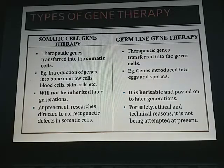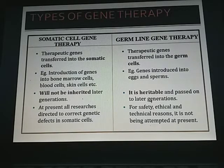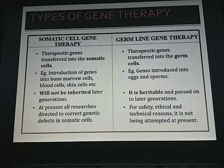Examples of somatic cell gene therapy include the introduction of genes into bone marrow cells, blood cells, and skin cells. Examples of germline gene therapy include the introduction of genes into eggs and sperms. Somatic cell gene therapy will not be inherited in later generations, but germline gene therapy is heritable and passed on to later generations.